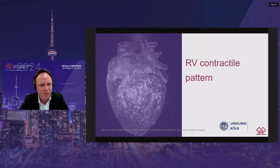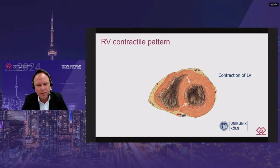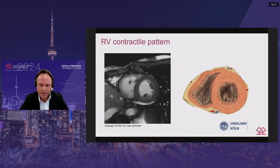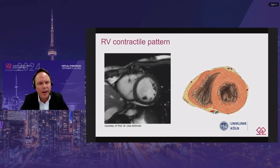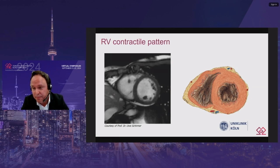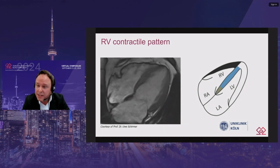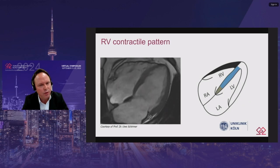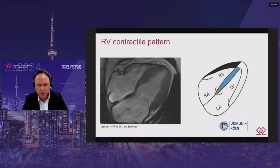Structure determines function, and this is also true for the right ventricular contractile pattern. Contraction of the right ventricle consists of three components: first, contraction of the left ventricle and interventricular septum with bulging of the septum into the right ventricular cavity; followed by a bellow-like movement of the right ventricular free wall; and longitudinal contraction leading to shortening of the longitudinal axis. This can be seen in MRI sequences showing the bulging of the right ventricular myocardium and the septum acting as an abutment to the free wall's motion.